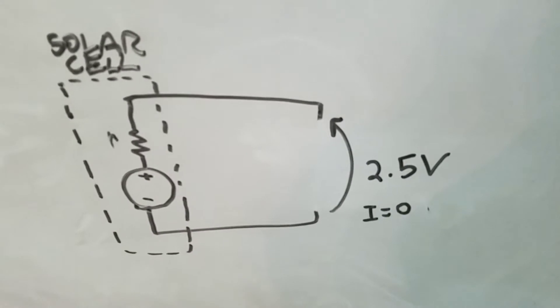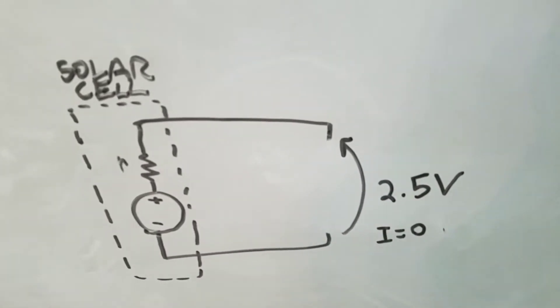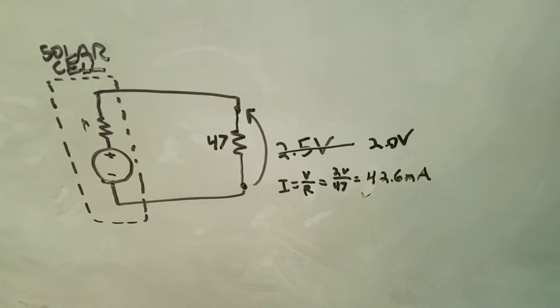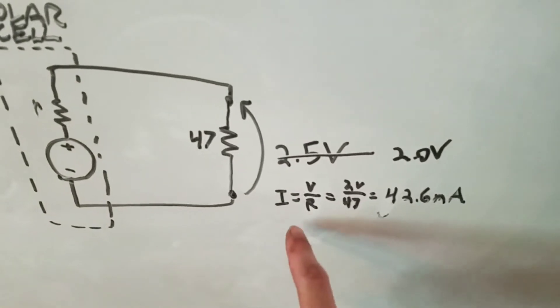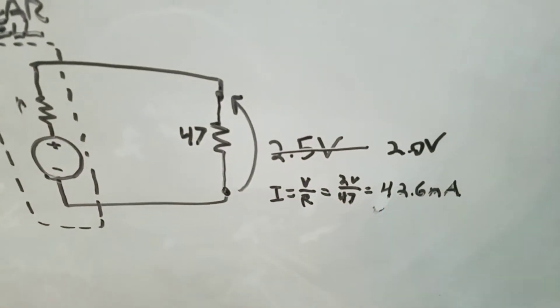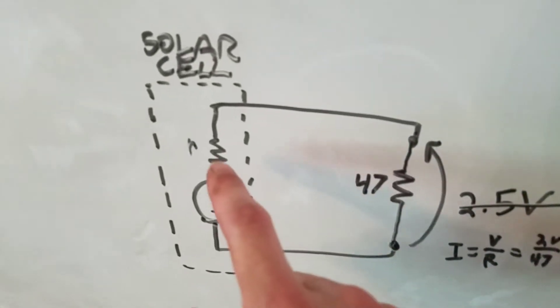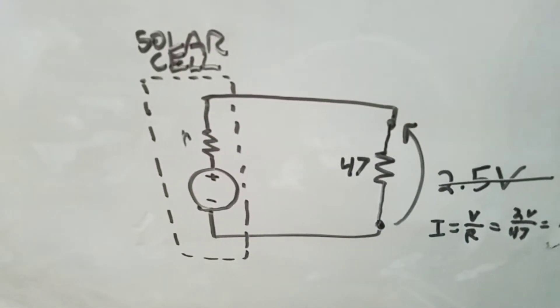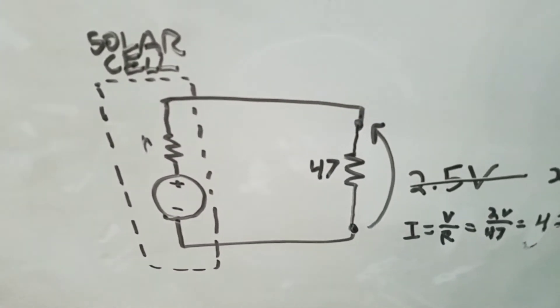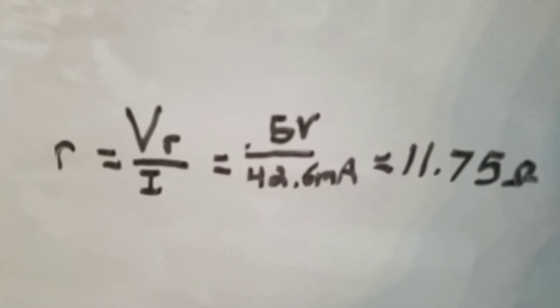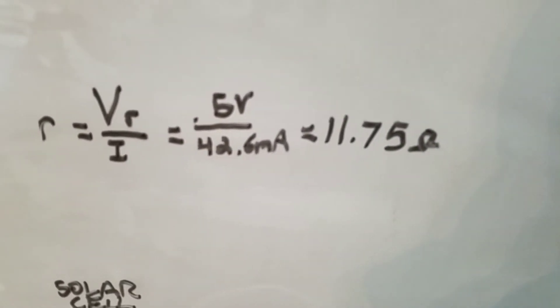Let's start with when we had no load connected. The output voltage was two and a half and the current was zero. But once the load resistor is added, the voltage drops about half a volt. We can use Ohm's law to calculate the current: 42.6 milliamps. Since we know that current and we also know that half a volt was dropped across the internal resistor in the solar cell, then we see that the internal resistor is 11.75 ohms.